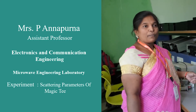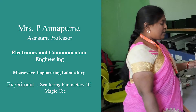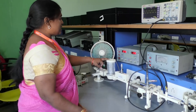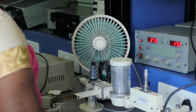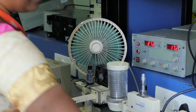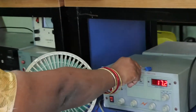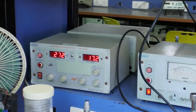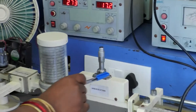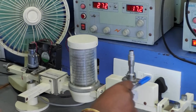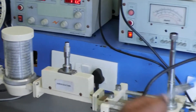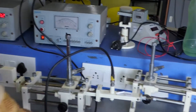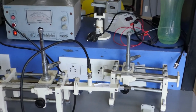For the Scattering Parameters of MAGIC-T, the Microwave Bench Setup we require is the Klystron Power Supply, Klystron Mount, Isolator, Frequency Meter, Variable Attenuator, Slotted Line Section, and Diode Detector. Along with this, we need MAGIC-T.